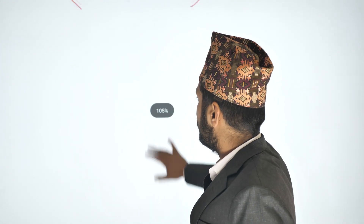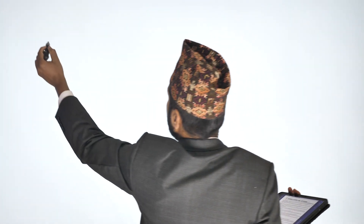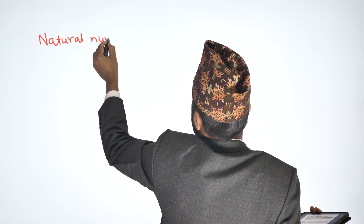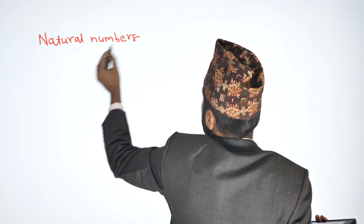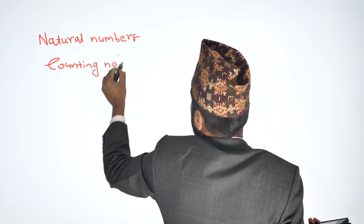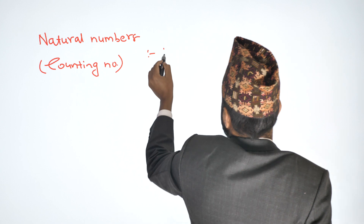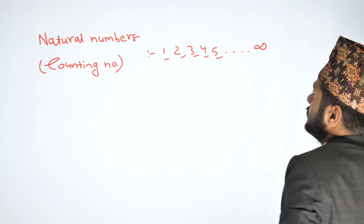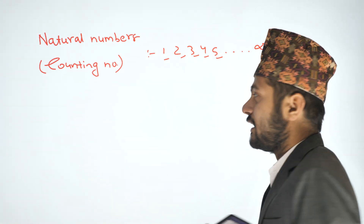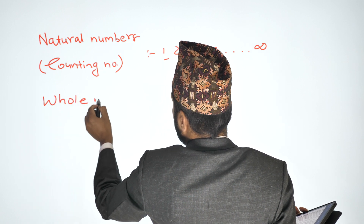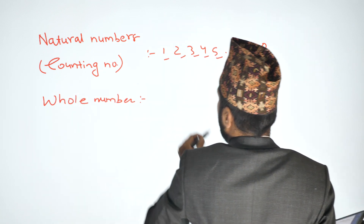By the number system, we will be working with numbers generally. The first type of numbers are natural numbers — also called counting numbers — which are 1, 2, 3, 4, 5, and so on.